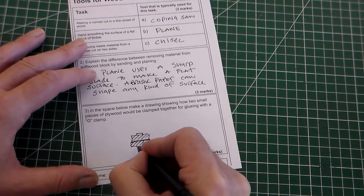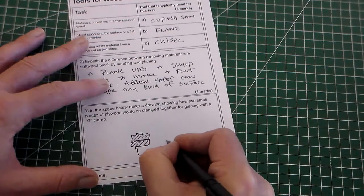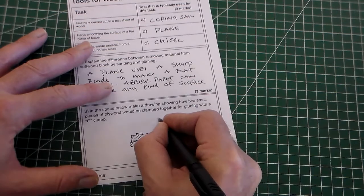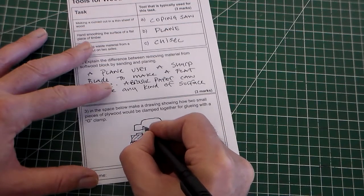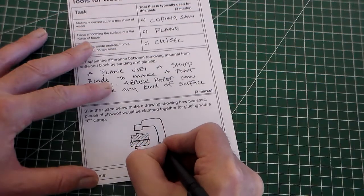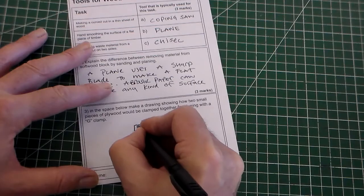We're going to try and draw our G-clamp, which is probably the most difficult thing, but we know it's kind of a G-shape. And then we draw our thread here.